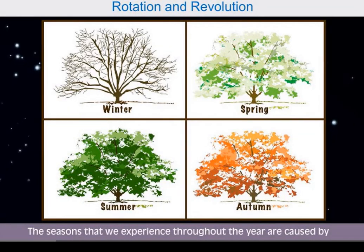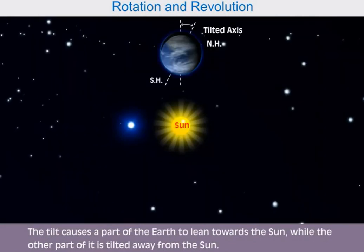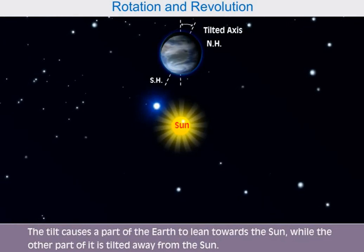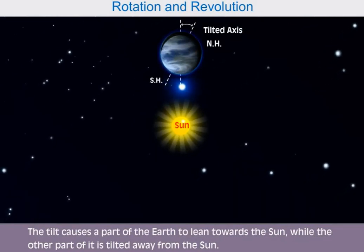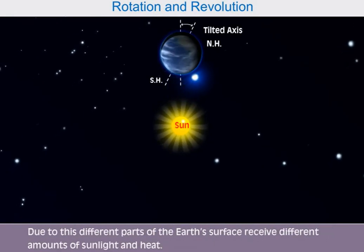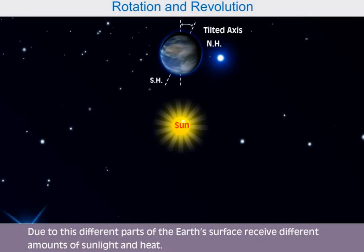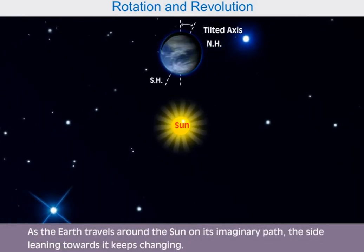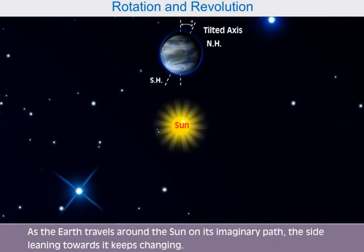The seasons that we experience throughout the year are caused by the Earth's revolution. The tilt causes a part of the Earth to lean towards the Sun, while the other part of it is tilted away from the Sun. Due to this, different parts of the Earth's surface receive different amounts of sunlight and heat. As the Earth travels around the Sun on its imaginary path, the side leaning towards it keeps changing.